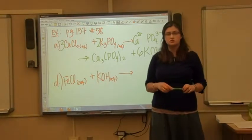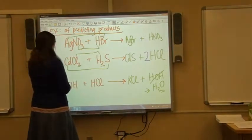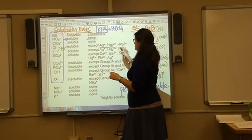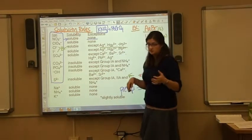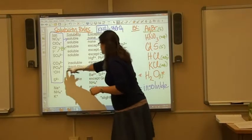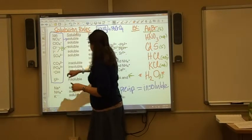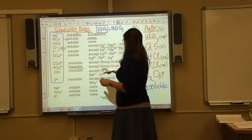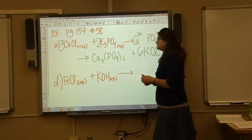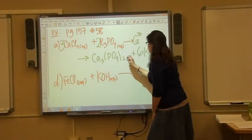Predicting which of the two products is the precipitate: KCl — all chlorides are soluble and potassium is not one of the exceptions, so KCl is soluble. For phosphate: all phosphates are insoluble except for Group 1A and NH4+. Calcium is in Group 2A, not 1A, so it is not an exception — therefore calcium phosphate is your precipitate.